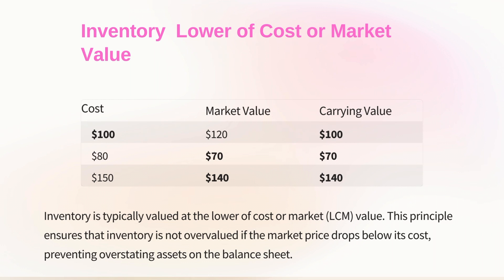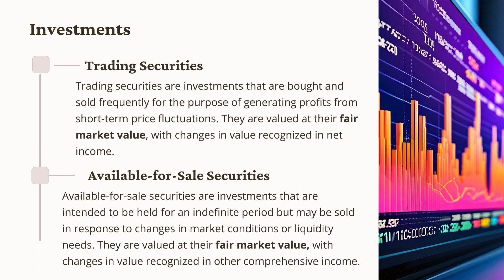Inventory is usually valued at the lower of cost or market. This principle ensures that inventory is not overvalued if market prices drop below its cost, properly reporting its expected future economic benefit. Investments on a balance sheet are valued based on their type, purpose, and accounting standards. Two common investments held by companies are trading and available-for-sale securities, which are revalued each reporting period at their fair market value, with changes reflected in net income or other comprehensive income.